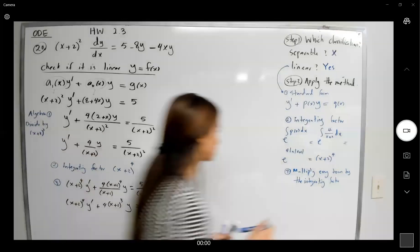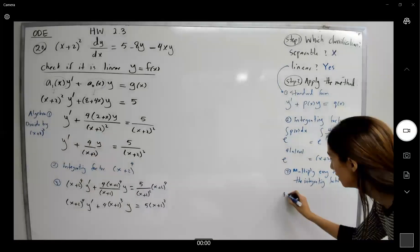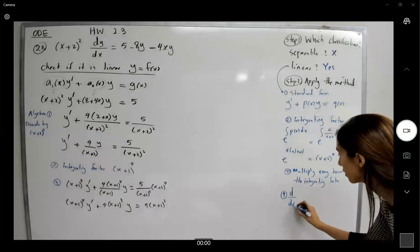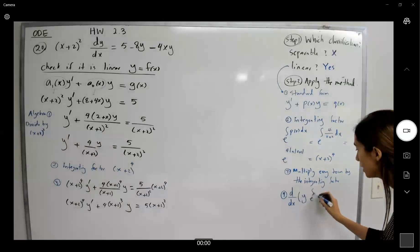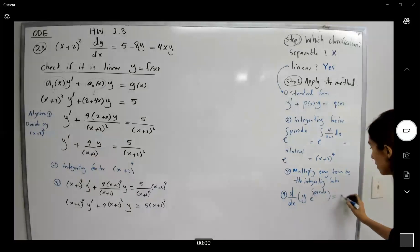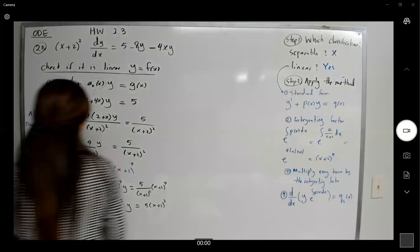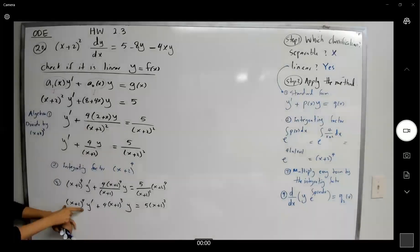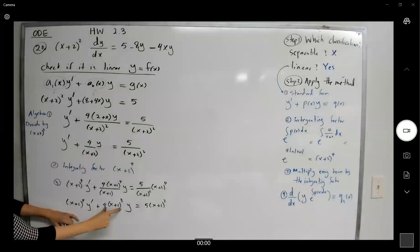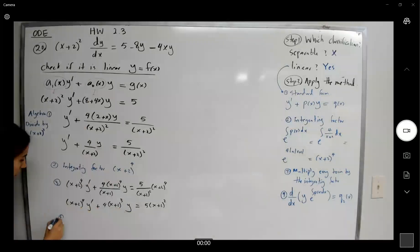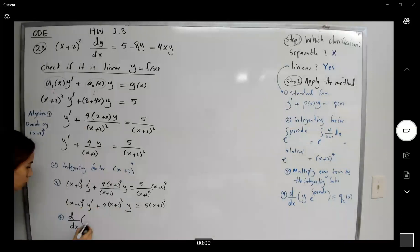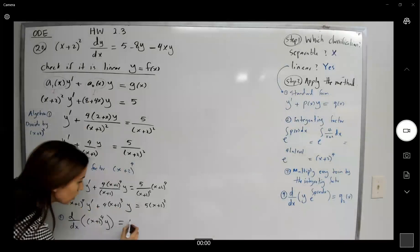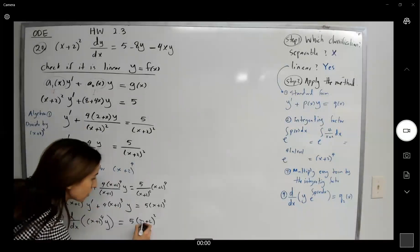On the left-hand side, we need to recognize the expanded form of the product rule. The compact form is d/dx of [y times the integrating factor]. This is your function times y′ plus the derivative of that function — which is 4(x+2)³ times y. So the left-hand side is d/dx[(x+2)⁴ · y], and on the right-hand side we have 5(x+2)².